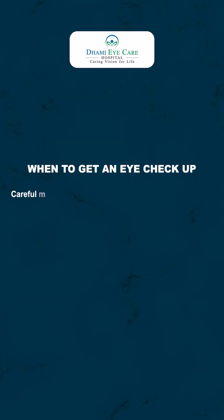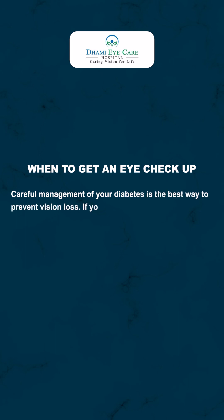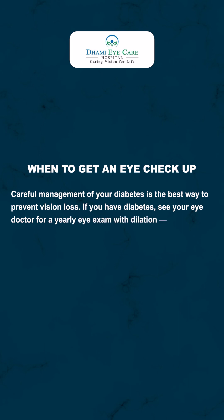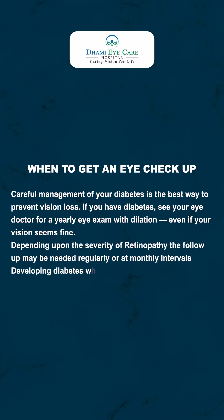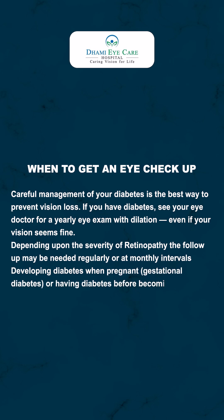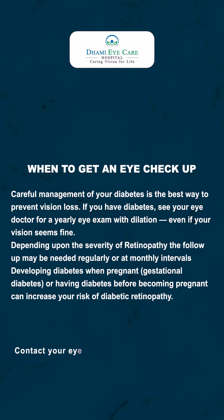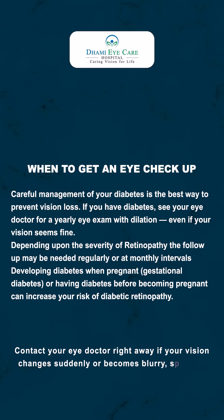Careful management of your diabetes is the best way to prevent vision loss. If you have diabetes, see your eye doctor for a yearly eye exam with dilation, even if your vision seems fine. Depending upon the severity of retinopathy, follow-up may be needed regularly or at monthly intervals. Developing diabetes when pregnant, gestational diabetes, or having diabetes before becoming pregnant can increase your risk of diabetic retinopathy. Contact your eye doctor right away if your vision changes suddenly or becomes blurry, spotty or hazy.